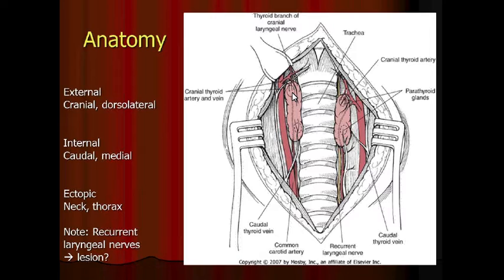This is obviously super important in surgery. There are two external parathyroids that are, of course, outside the thyroid gland, but there are two others that are literally inside each thyroid gland. This is what happens in the vast majority of cases. Occasionally there is ectopic tissue — it can be anywhere between this region and the heart base.